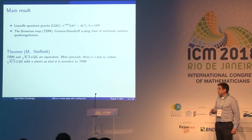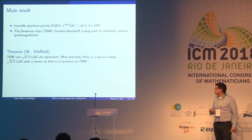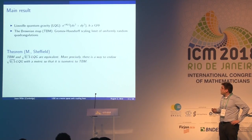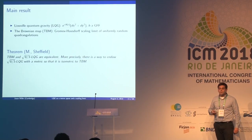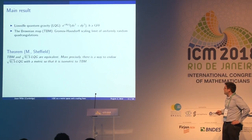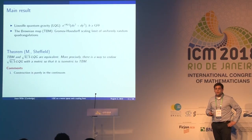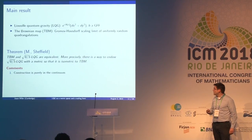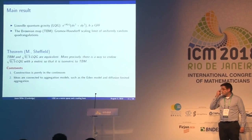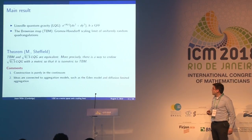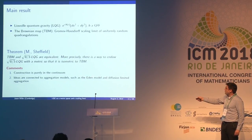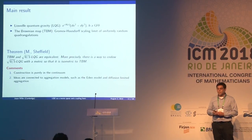The main result is that Liouville quantum gravity and the Brownian map are exactly equivalent. The argument takes LQG with gamma equal to the square root of 8/3 and puts a metric on top of it which is isometric to the Brownian map. This is purely a continuum construction — no discrete approximations — and the ideas are connected to classical aggregation models like the Eden growth model and diffusion limited aggregation.